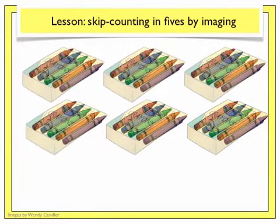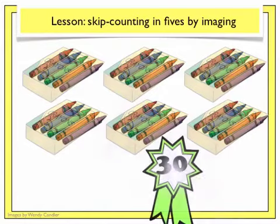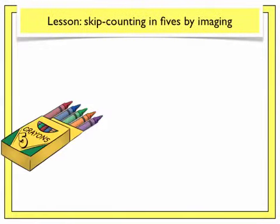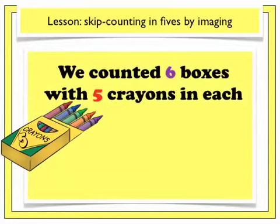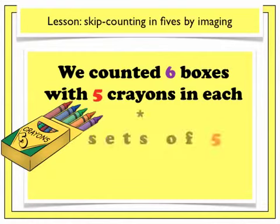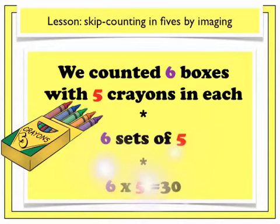How is that imaging coming on? Could you see the crayons before they slid out of the box each time? We counted 6 boxes with 5 crayons in each box. Another way to say that would be 6 sets of 5, and a way to write it would be 6 times 5.